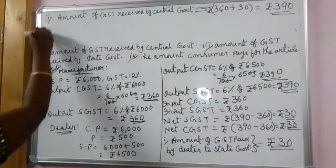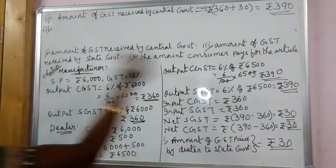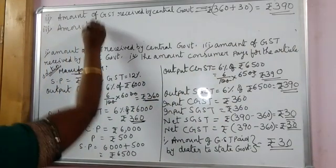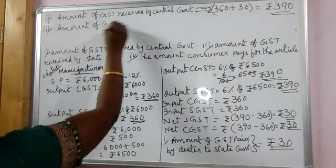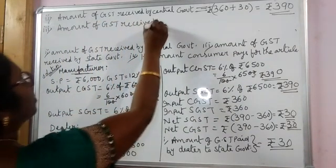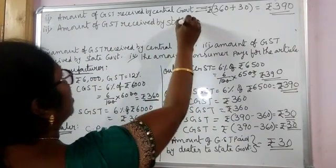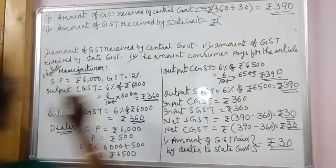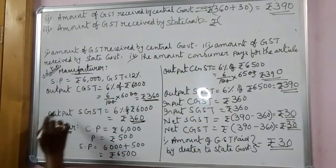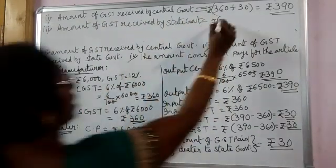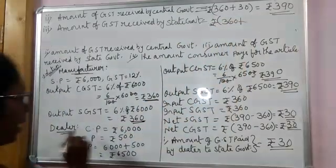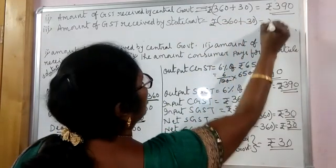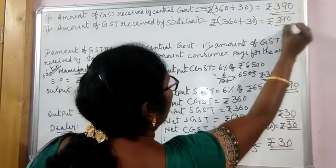Third: the amount of GST received by the state government. The manufacturer paid 360 rupees to the state government and the dealer paid 30 rupees to the state government. So the state government also received 390 rupees.